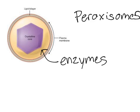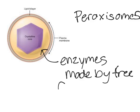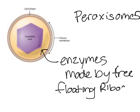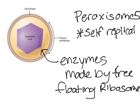The difference is that peroxisomes are of an unknown origin, so people still don't know where these come from. The enzymes inside the peroxisomes are synthesized by free-floating ribosomes. One important thing about peroxisomes is they self-replicate, which means they reproduce by themselves.